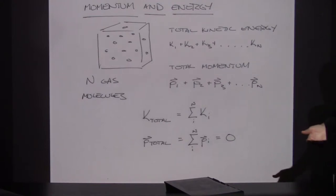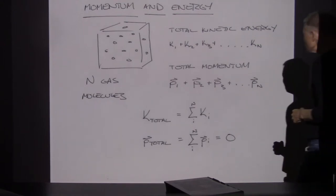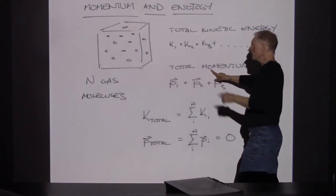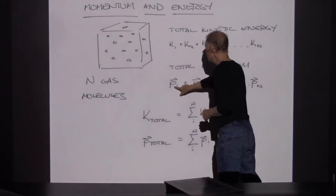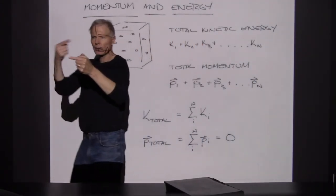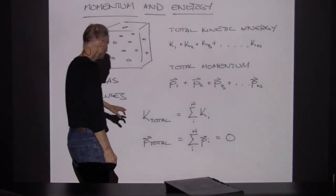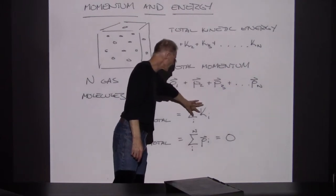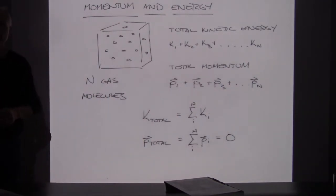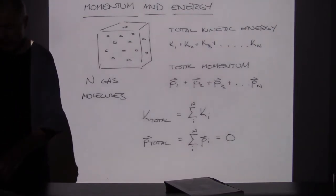The total momentum of all the molecules is a vector — it's adding vectors together. For every molecule going in one direction, there's a molecule going in exactly the opposite direction, and the momentum cancels out. So the total kinetic energy for a collection of molecules is the sum of all individual kinetic energies, but the total momentum is zero. Momentum will cancel — one particle going one direction and another going the exact opposite direction, those two momentum effects cancel out.